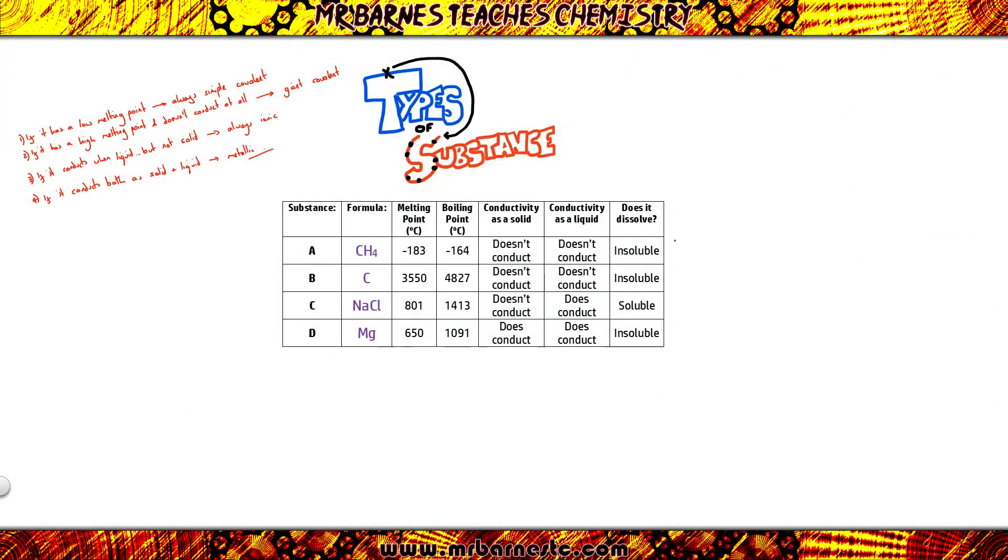So let's have a look at an example table. If we start off with substance A, you can see we've got a low melting point and low boiling point. We don't need to look at any of the other properties. Straight away I can say A is simple covalent.